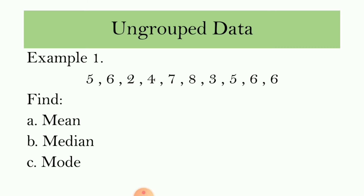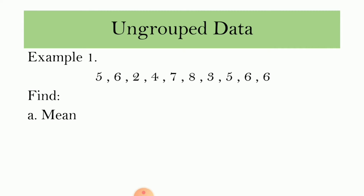First, let us have ungrouped data. For example, we have the data: 5, 6, 2, 4, 7, 8, 3, 5, 6, and 6. Find the mean, median, and mode.